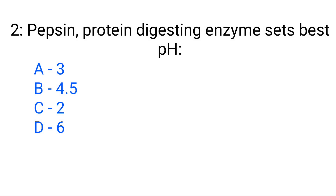Question number 2. Pepsin, a protein-digesting enzyme, has its best pH at: Option A. 3, B. 4.5, C. 2, D. 6. The correct answer is option C. 2.